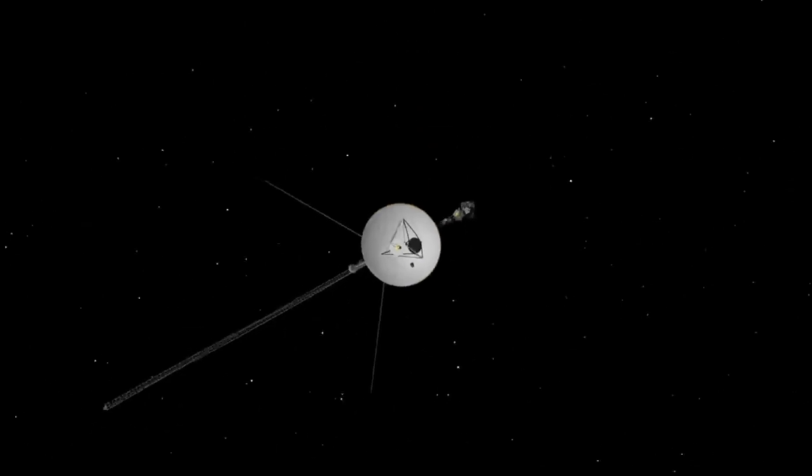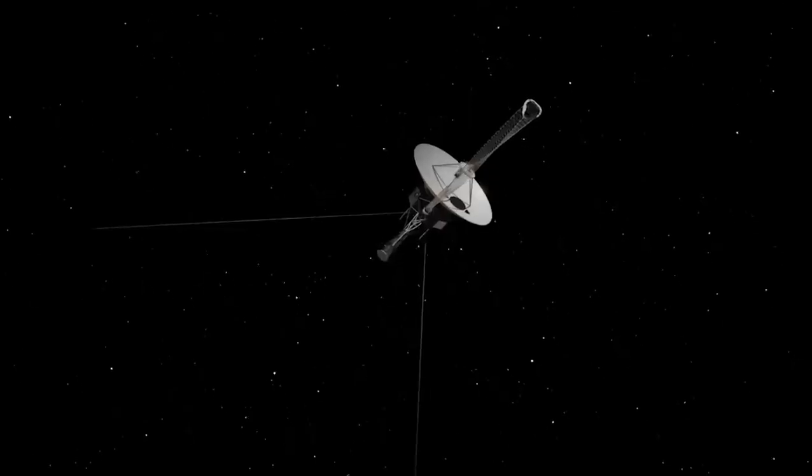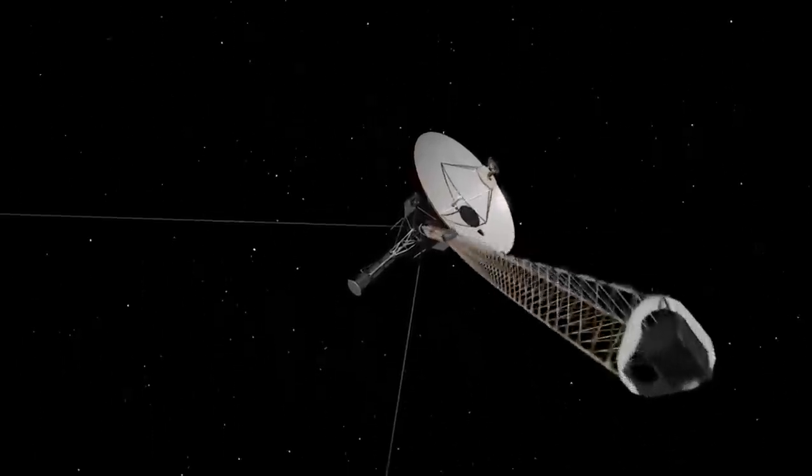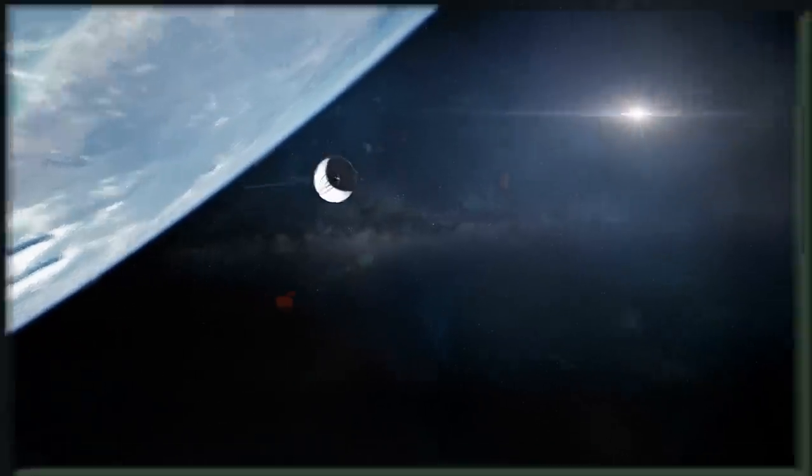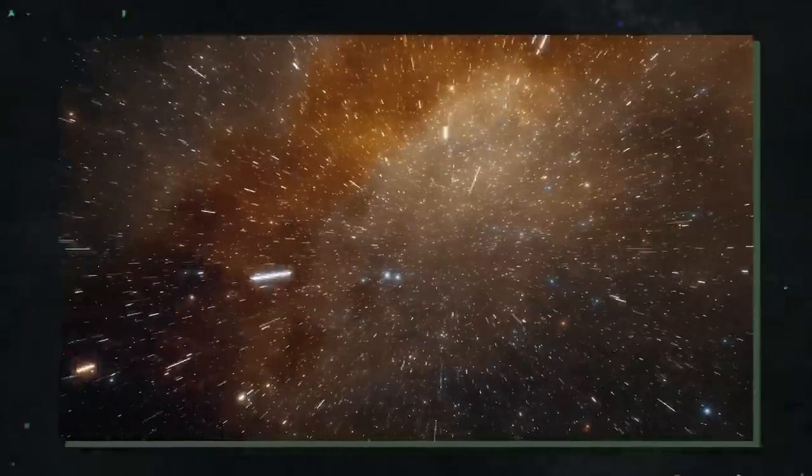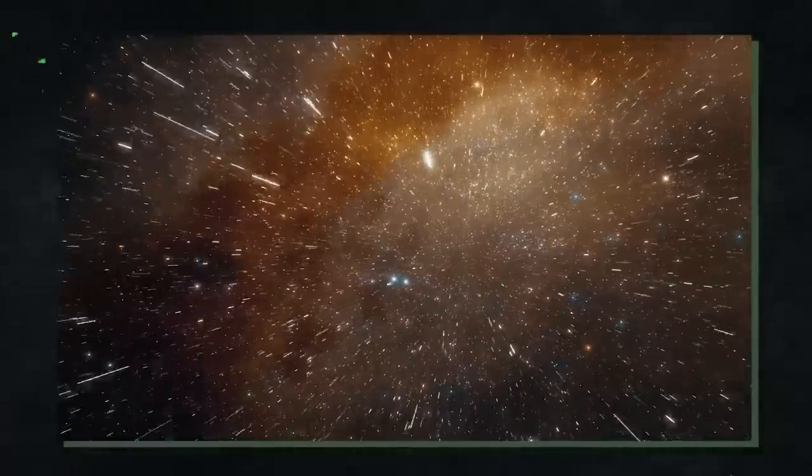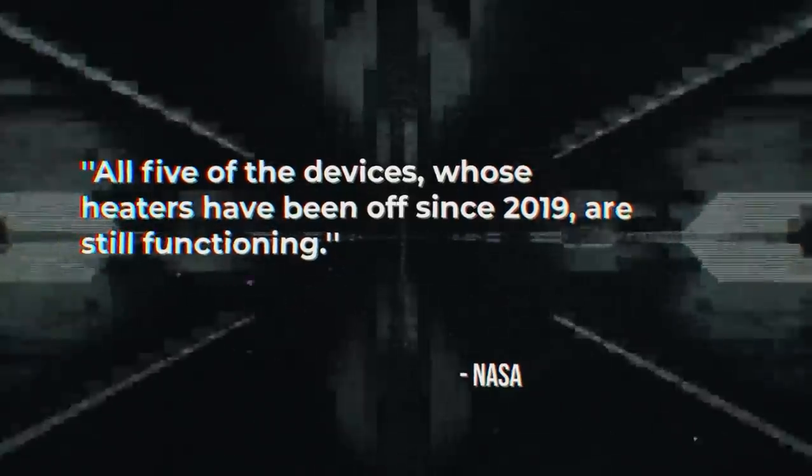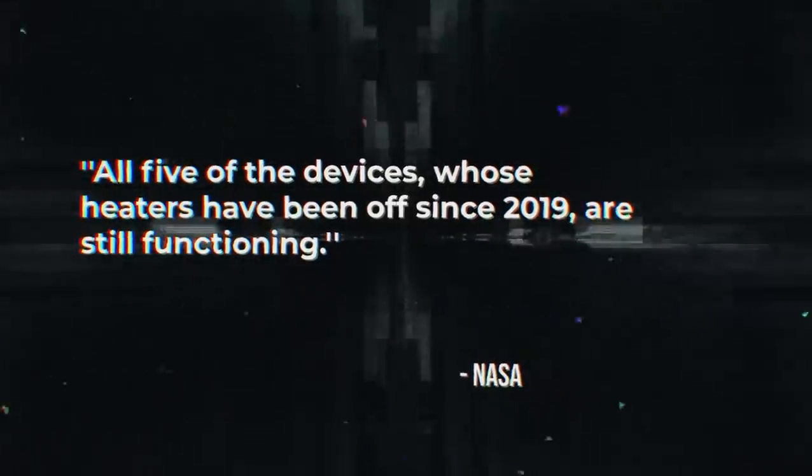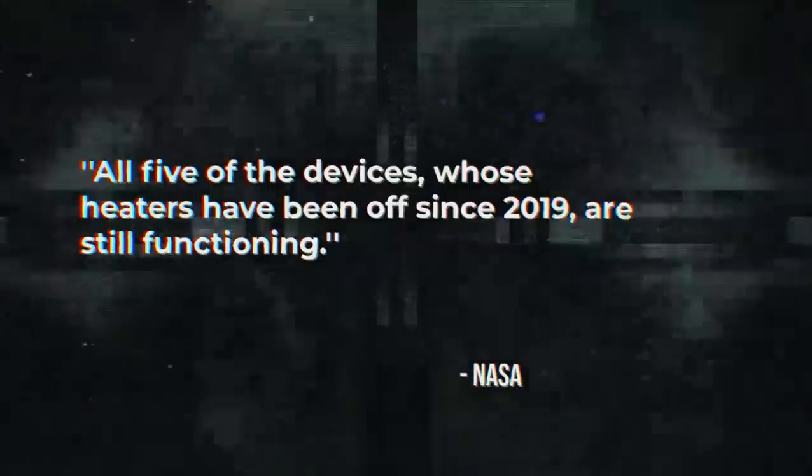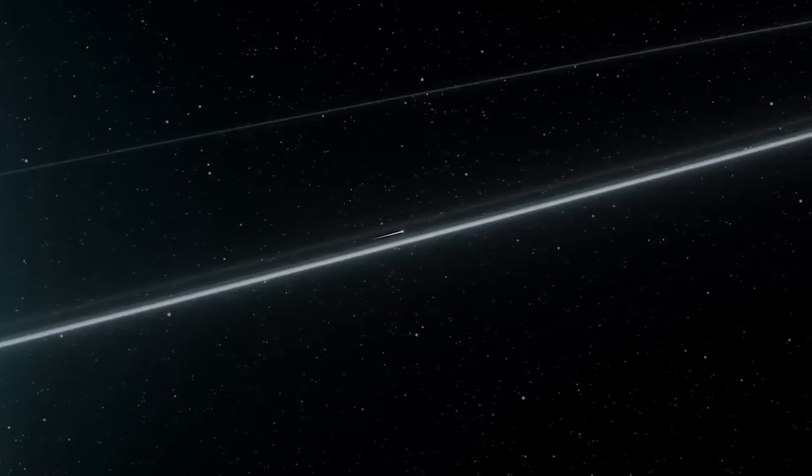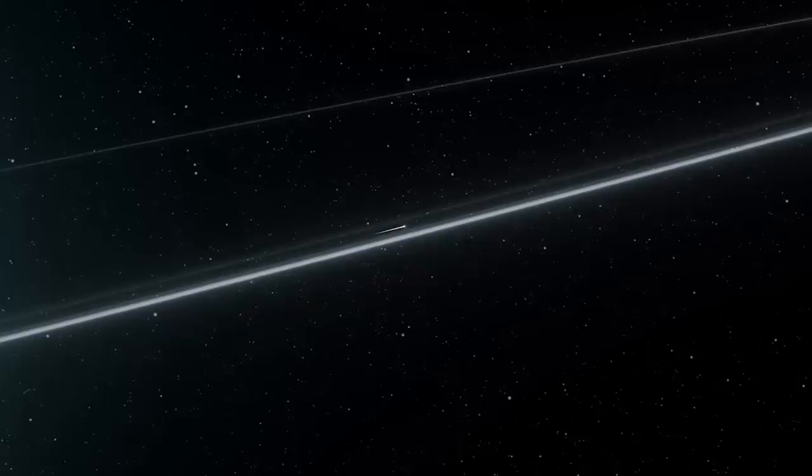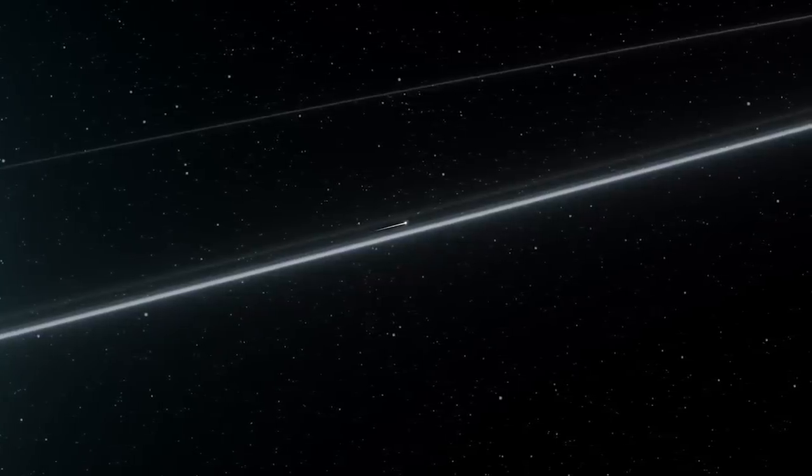The Voyagers lose power as the plutonium decays and produces less heat. In order to make up for this, NASA reported that the team disabled all systems, including several that were first thought to be vital. There are heaters among them, which protect still-working instruments from the bitter cold of space. The space agency said that all five of the devices, whose heaters have been off since 2019, are still functioning. How the Voyagers can continue to function in temperatures much below what they were designed for continues to baffle NASA researchers.